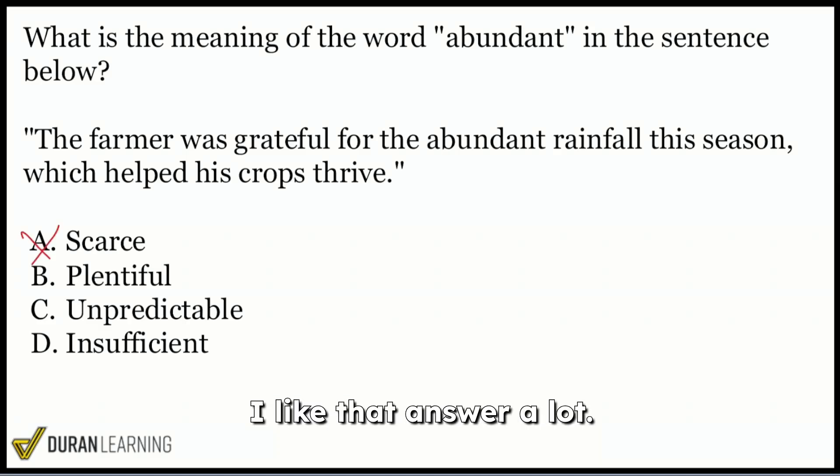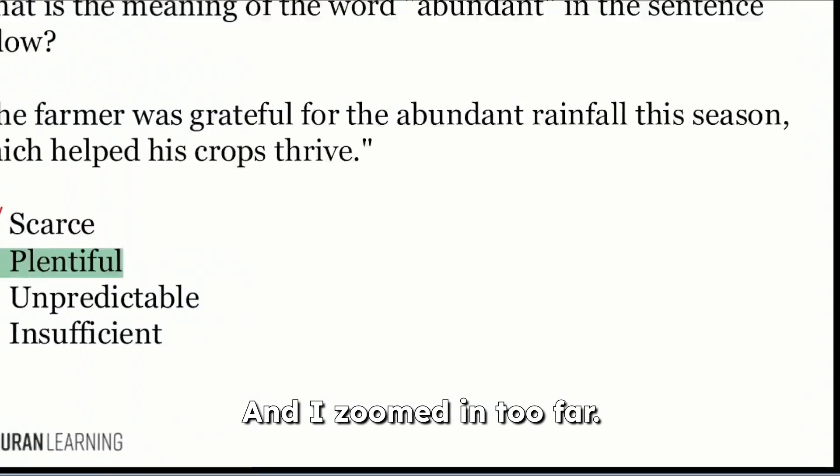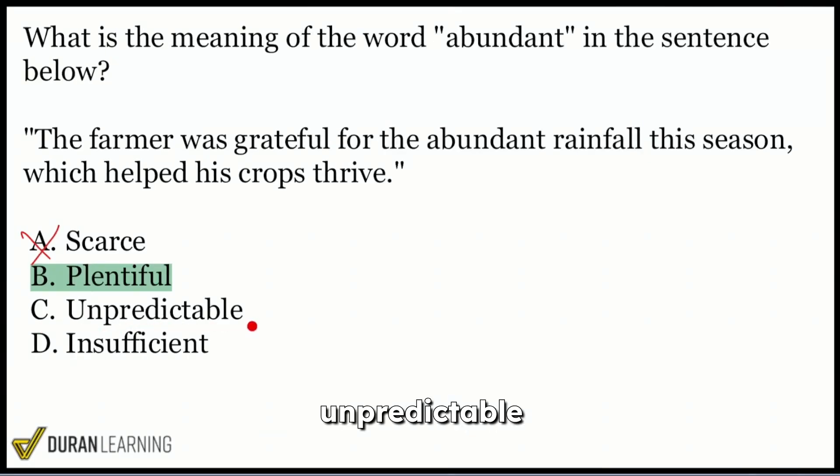He's grateful for the abundance, the tons and tons of rainfall this season, which helped those crops thrive. Not scarce because we're not talking about not having water. So nope. Plentiful. I like that answer a lot. Unpredictable. Let's go ahead. C, unpredictable. Not quite fitting here. Insufficient. No, abundant, we said, means plentiful. You know, a lot of it. And so that's why B is the correct answer for number three here, for word knowledge.